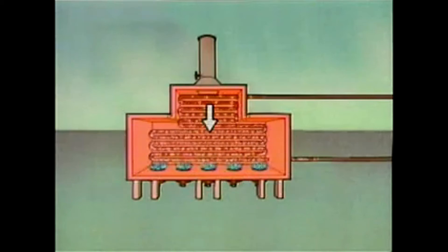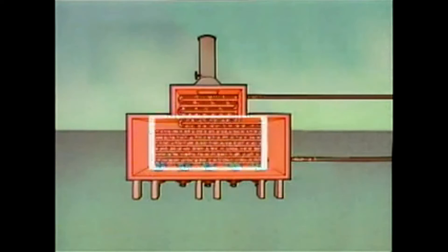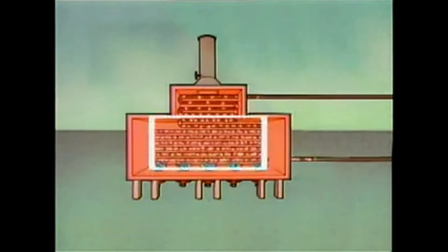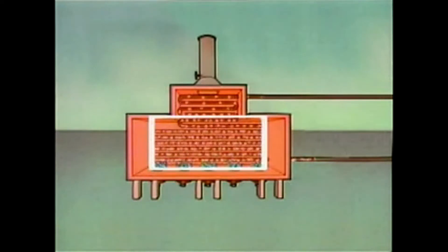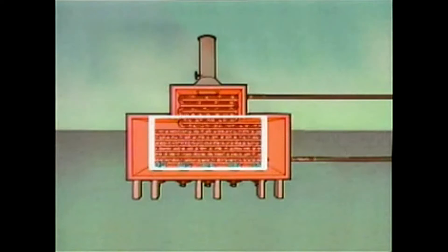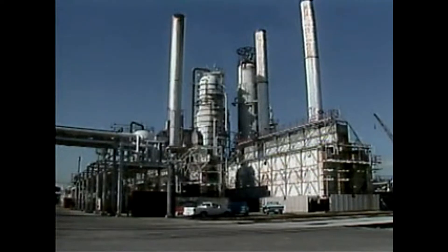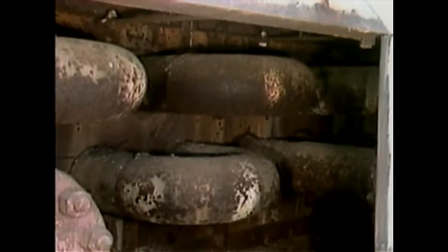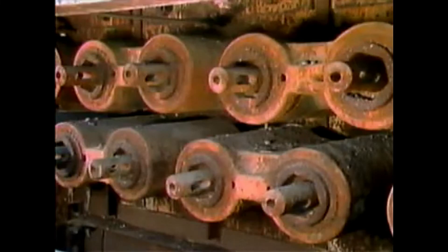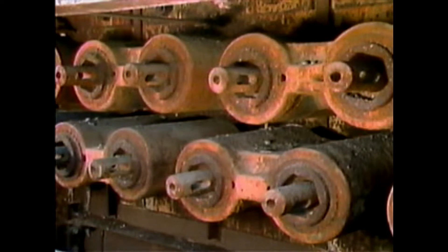From the convection section, the process fluid passes through the tubes in the radiant section. The process fluid becomes hottest in the radiant section because more heat and higher temperatures are available. Regardless of the design of the furnace, the tube arrangement has to allow for a continuous flow of process fluid. For example, these tube ends are connected with tubing bends. In other tube arrangements, the tubes are connected together by enlarged sections of pipes called headers instead of tubing bends.